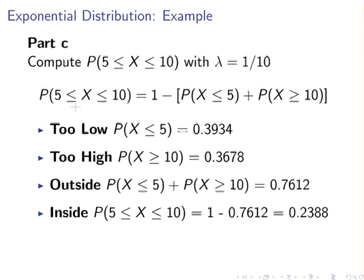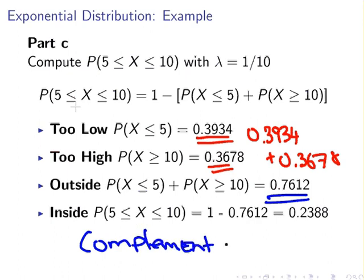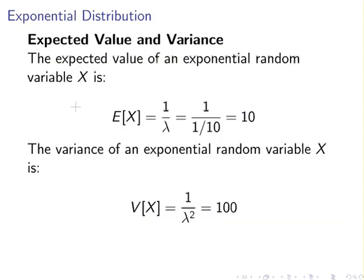The probability of being too low, P(X ≤ 5), is 0.3934 from earlier. The probability of being too high, P(X ≥ 10), is 0.3678 from earlier. Adding these gives the probability of being outside: 0.3934 plus 0.3678 equals 0.7612. The probability of being inside the interval is therefore 1 minus 0.7612, giving an answer of approximately 0.2388 — about 23%.